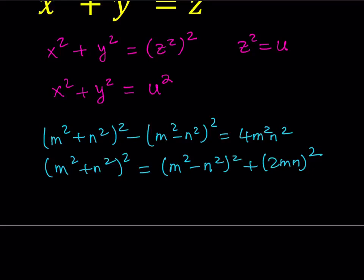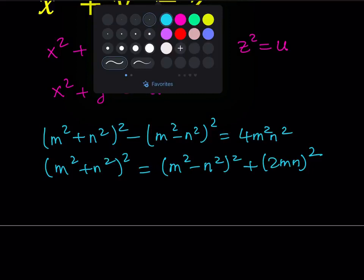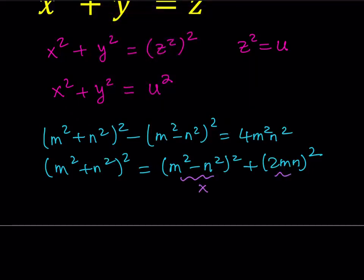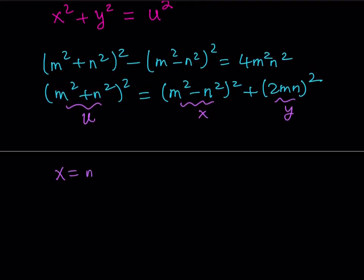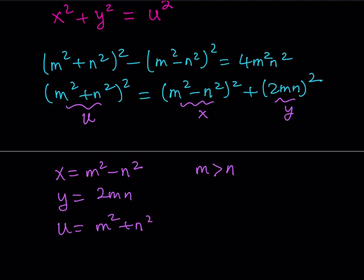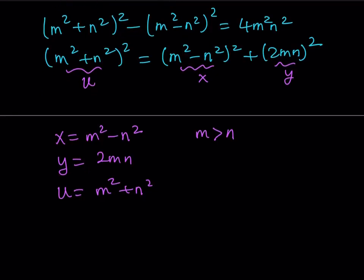From this equation we can safely say — assuming this equals x, this equals y, and this equals u, where u replaces z squared — this gives us a nice solution. But remember, our goal is to solve for x, y, z, not x, y, u. So let's write these down: x equals m squared minus n squared, y equals 2mn, and u equals m squared plus n squared. We want these to be positive integers, so I'll assume m is greater than n, where both are positive integers. We found the solution in two parameters m and n, but my goal is to get to z.